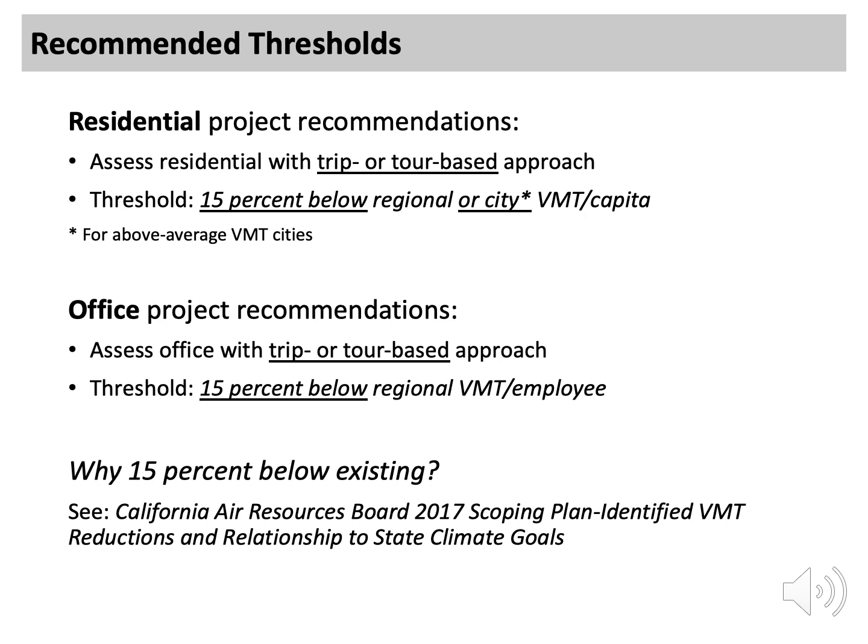OPR recommends basing thresholds of significance on California's science-based emissions reduction targets, ensuring that current development establishes lower VMT travel patterns necessary to achieve long-run climate and air quality targets enshrined in law. For residential development, a threshold of 15% below existing regional or city VMT per capita aligns with those targets. Using region or city as the reference geography allows each jurisdiction to streamline its most transportation-efficient housing development and ensures that reference geography is not drawn strategically to get a permissive threshold. For office development, a threshold of 15% below existing regional VMT per employee aligns with those targets, as commute trips to offices are among the longest types of daily trips, often crossing city lines, making a regional reference geography the most appropriate.